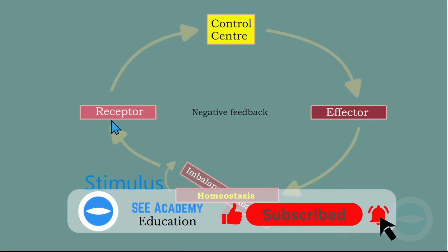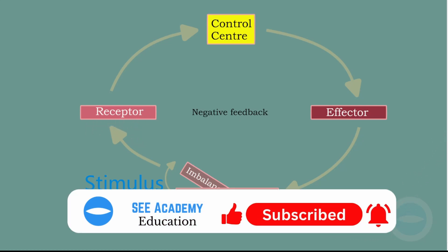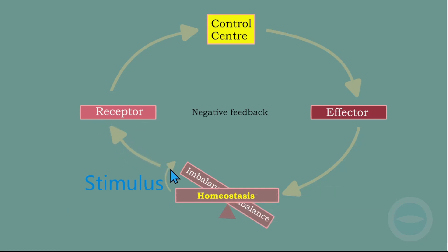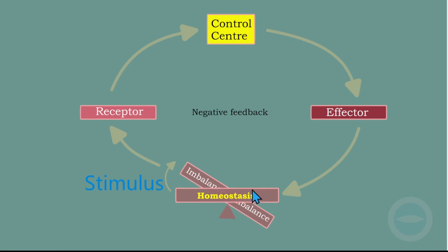After the stimulus has caused the imbalance, there will be a receptor. The receptor will detect the changes and send a message to the control center. The control center could be a gland or the brain. The control center then sends information to the effector so that the effector can take the correct action and reverse the stimulus to maintain or restore balance.